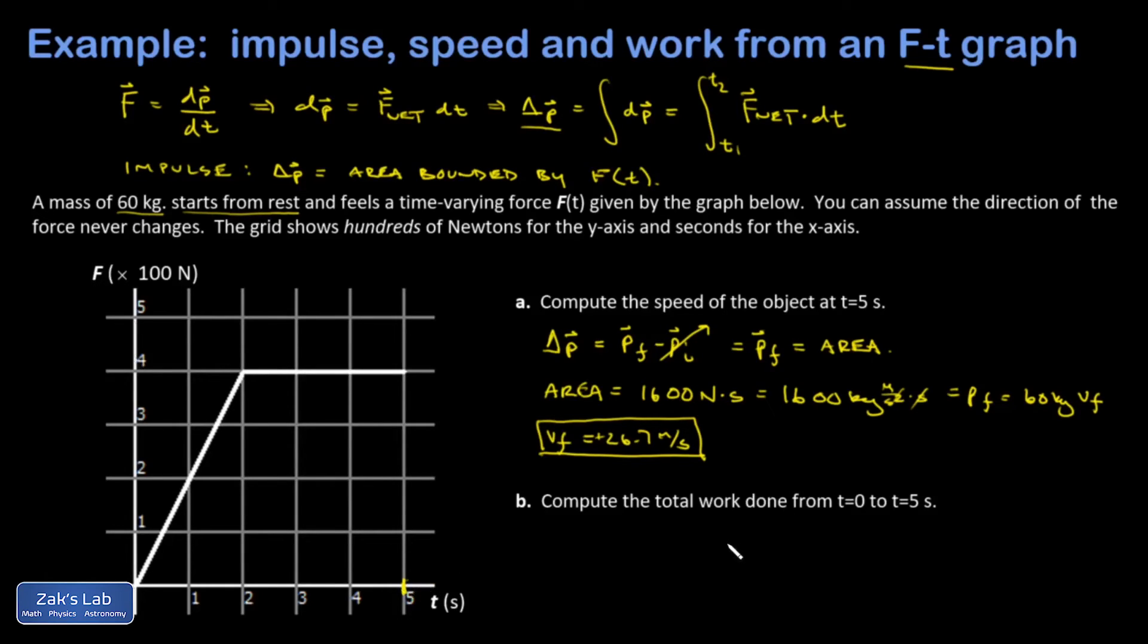So how are we going to get at the total work? It's not the area under the curve. But I know the object started from rest, so the kinetic energy was zero in the initial state. And then the object ends up moving this fast. So I can just find the change in kinetic energy and say that must be the total work on the object.